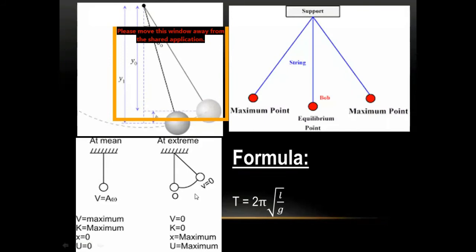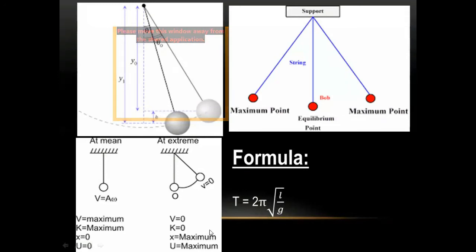The formula for the time period of a pendulum is T = 2π√(L/G), where π ≈ 3.14, G is the acceleration due to gravity, and L is the length from the point of suspension to the center of the ball.